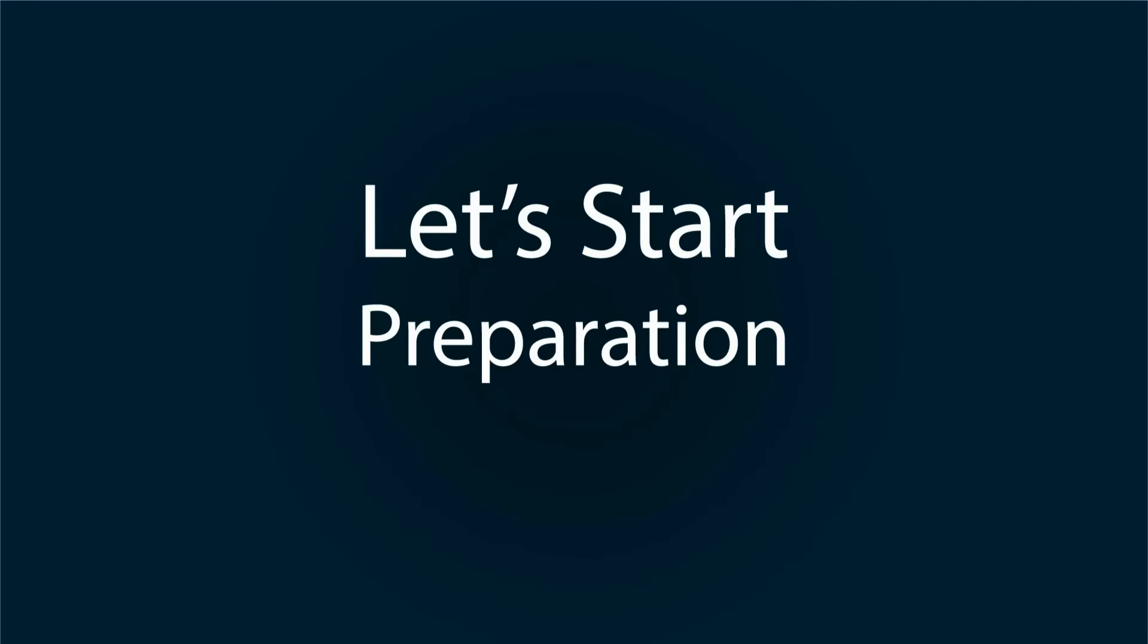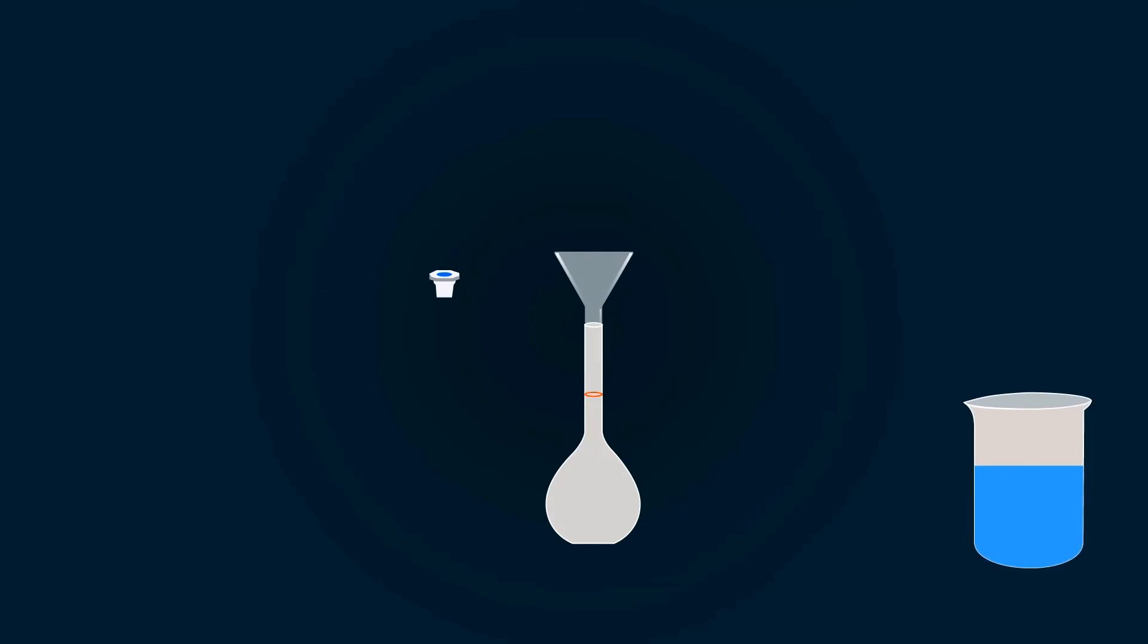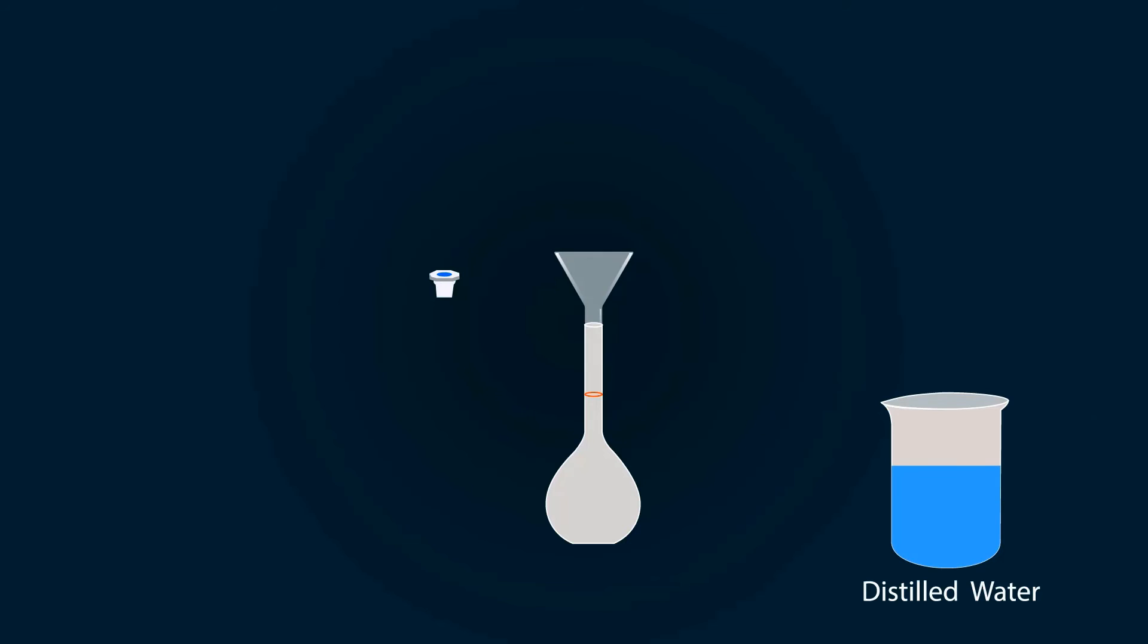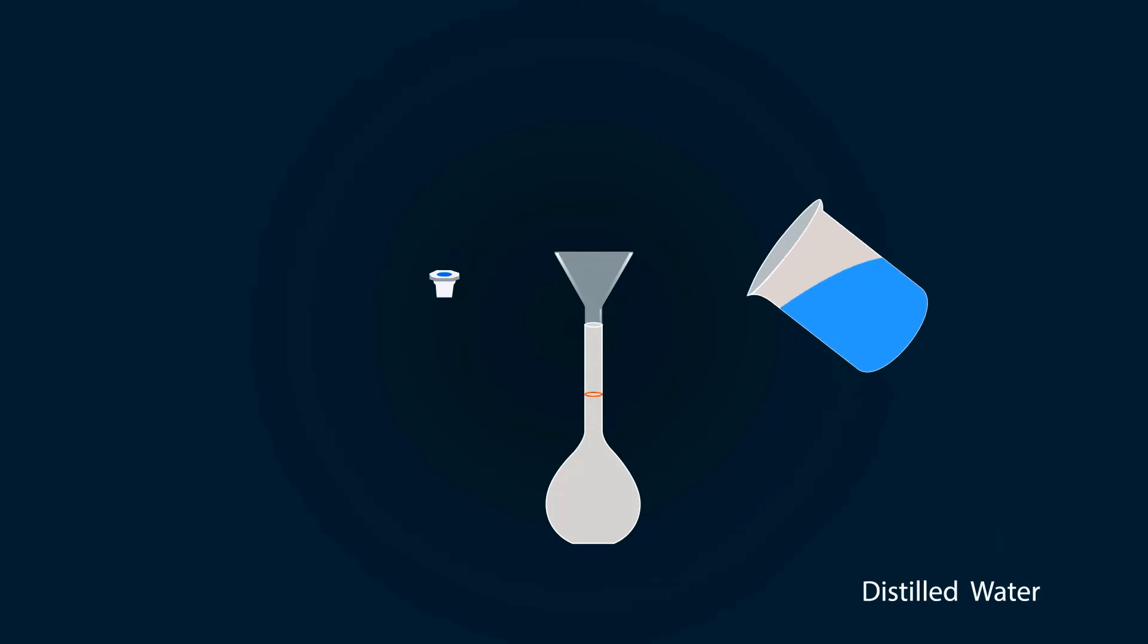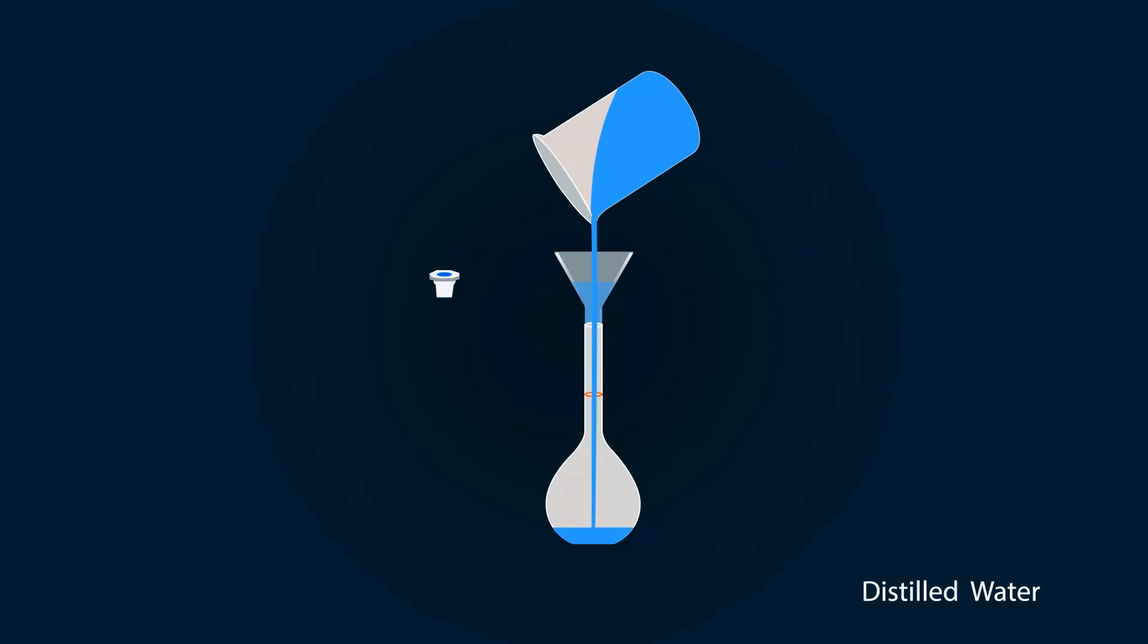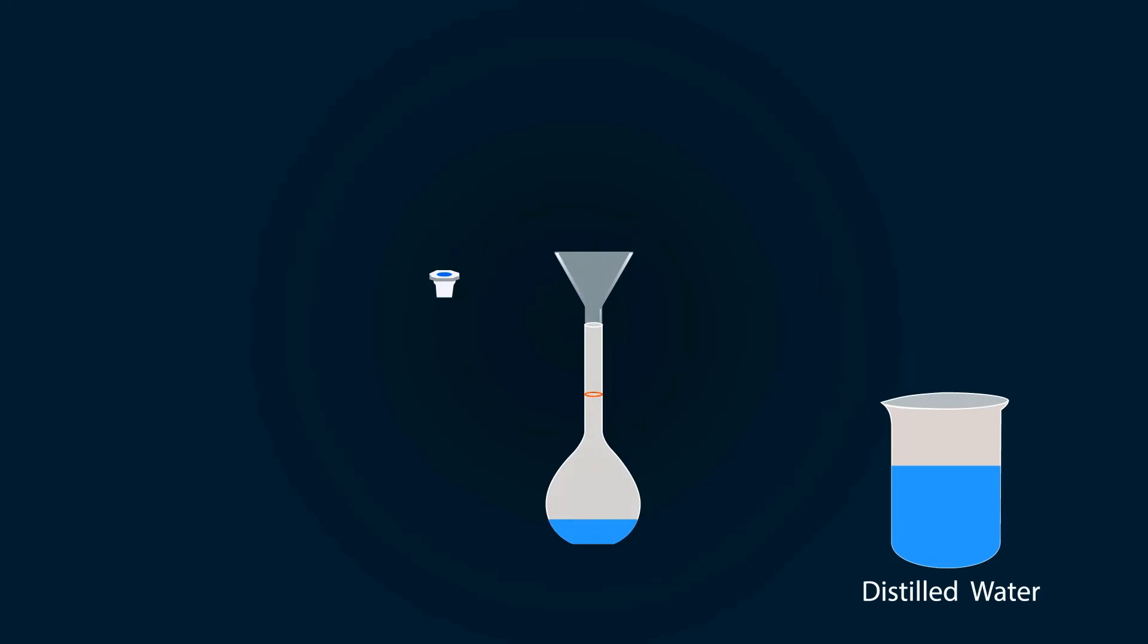Let's start our preparation. First of all, take a measuring flask and put a funnel on the top. Start adding some distilled water into the measuring flask. You should not add nitric acid directly into the measuring flask